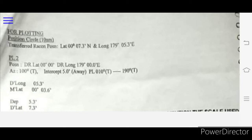Transferred reckoning position: latitude 00°07.3'N, longitude 179°05.3'E. Now for plotting, I will make a position circle of 10 nautical miles as per the question. My vessel is 10 nautical miles away.